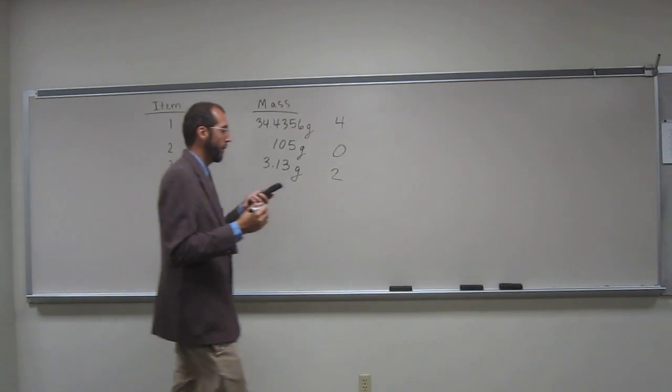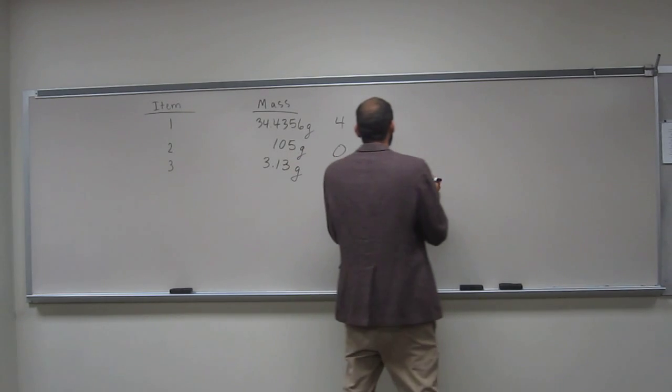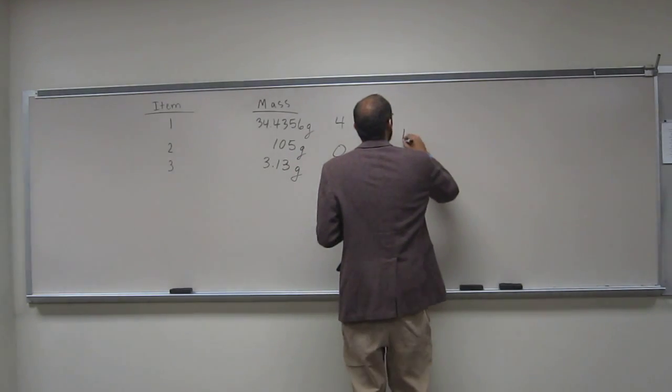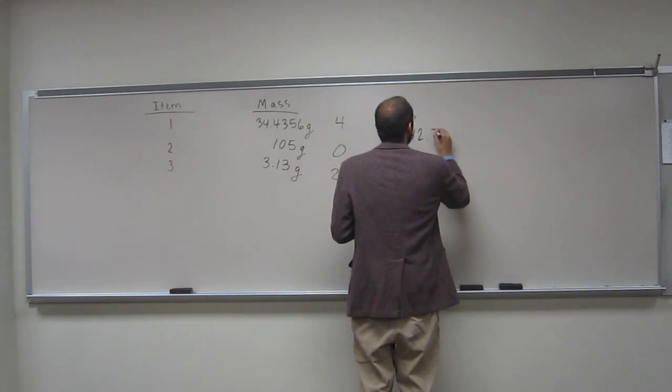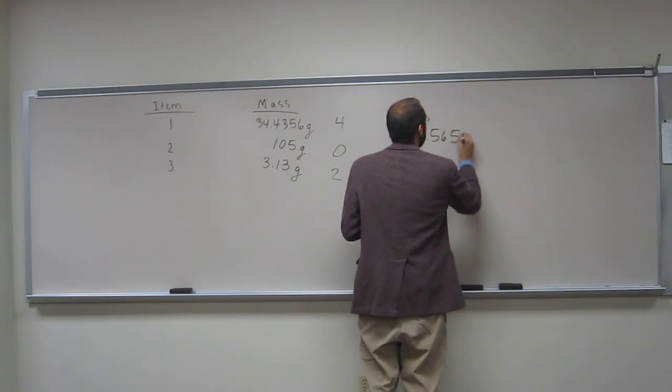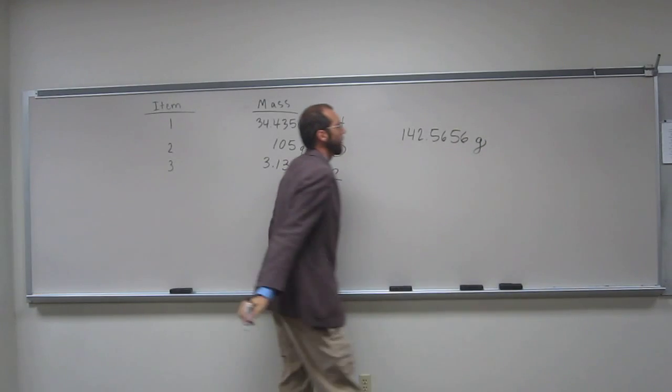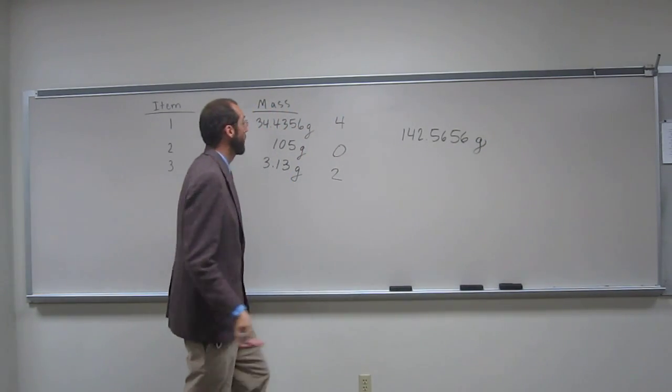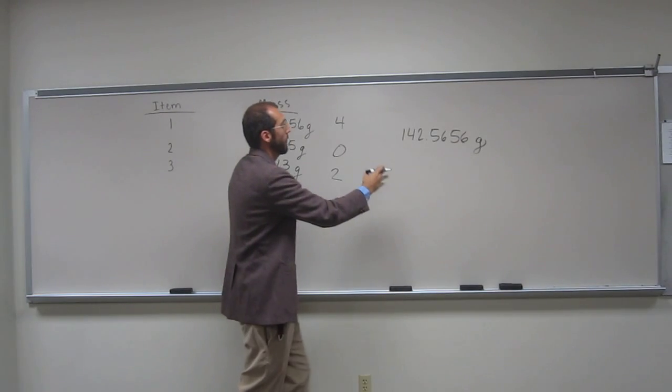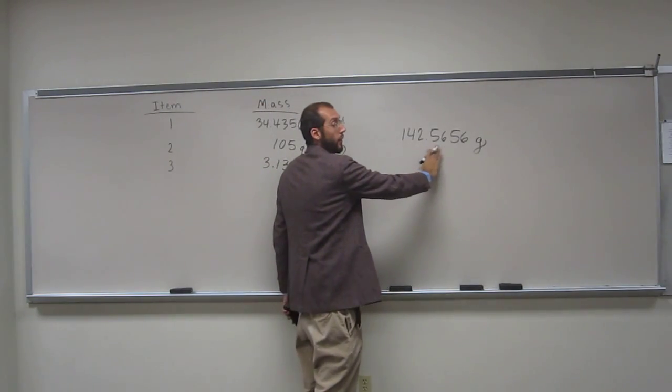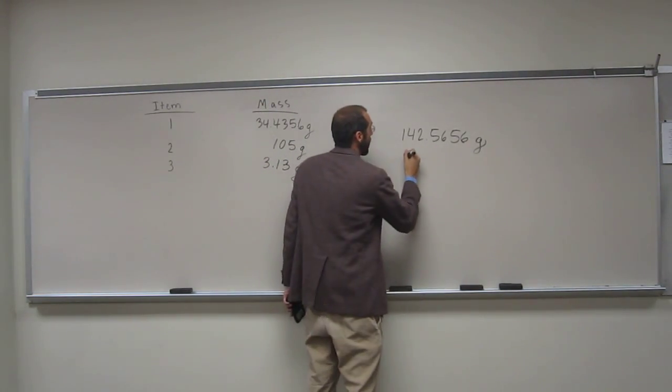So, I get 142.5656. So, 42.5656. And like we said, grams. So, like we said, we're not going to use all of those numbers. We're going to cut it off. And since this is higher than 5, we're going to round up.